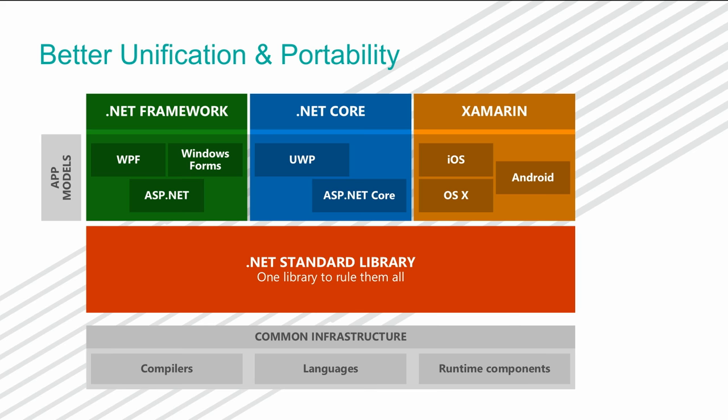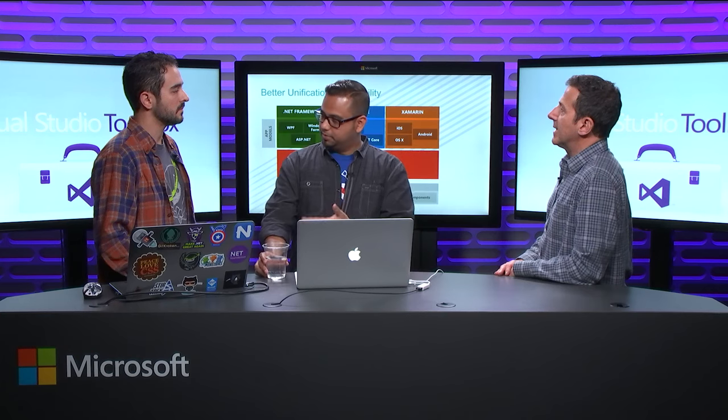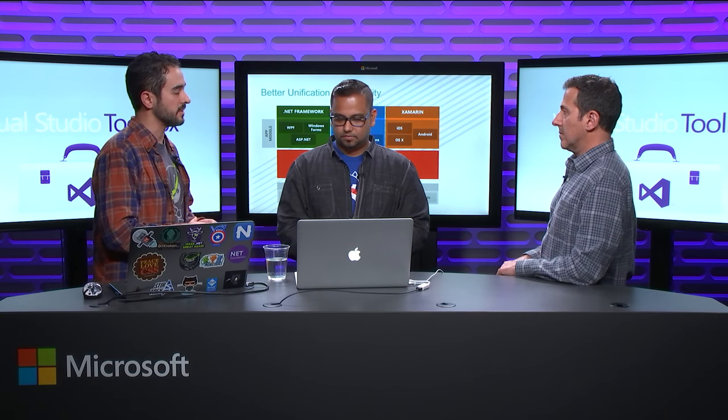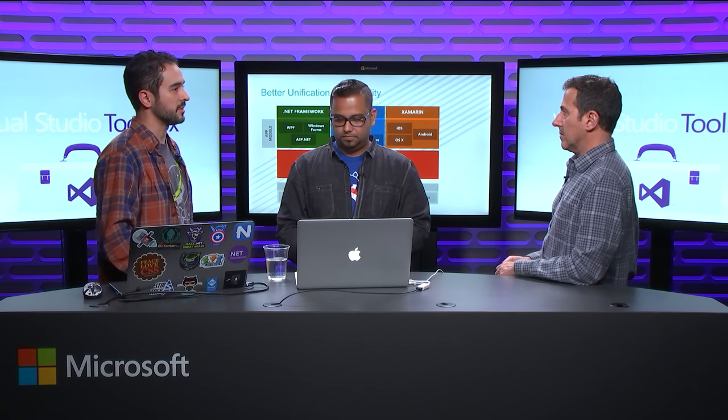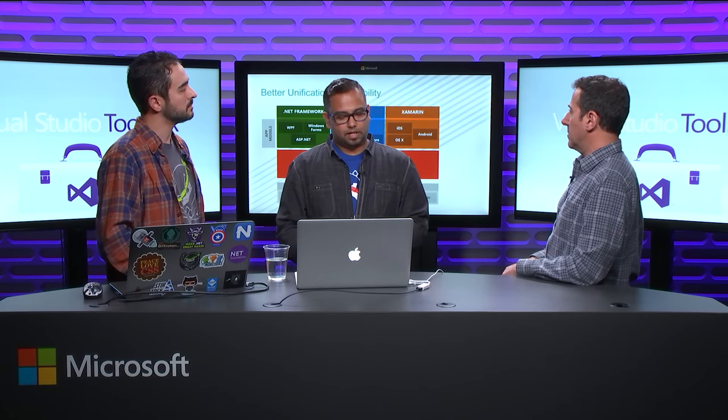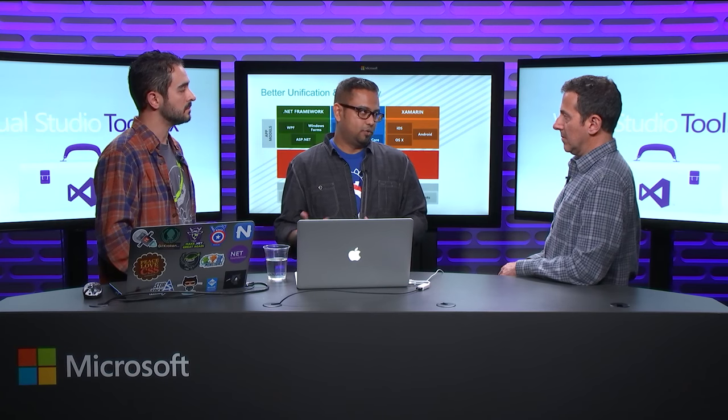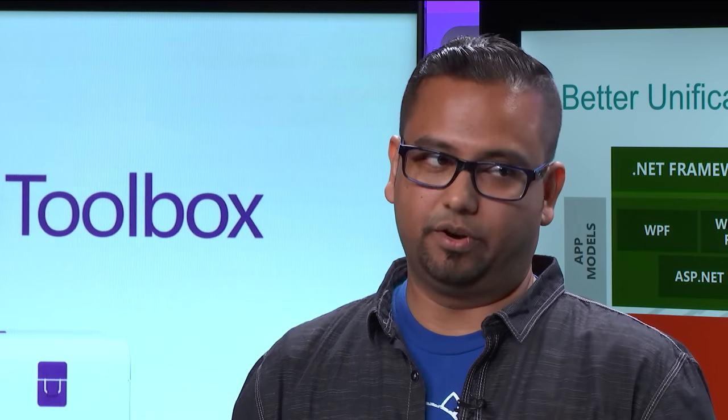The version of .NET Standard you're targeting determines compatibility: a lower version has the most compatibility across all platforms, while higher versions of the .NET Standard library mean a smaller set of devices you support. In portable class libraries, we shipped libraries and frameworks tied to specific devices. Here we're saying let's generalize .NET as a whole — if you're talking my language, meaning you run whatever version of .NET I'm targeting, then I have access to your APIs.